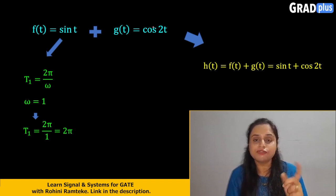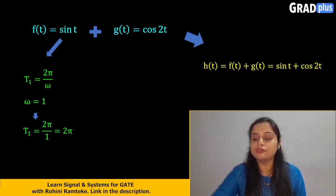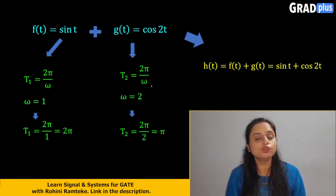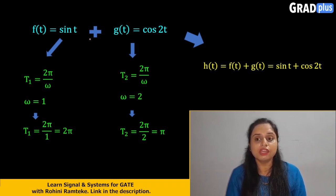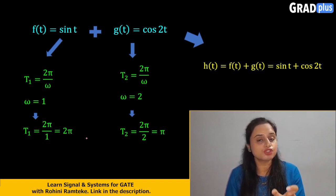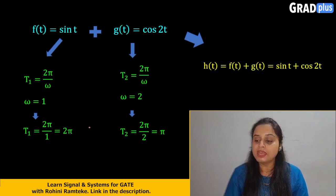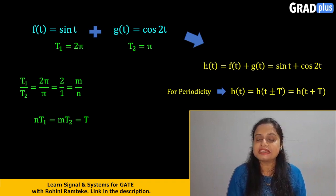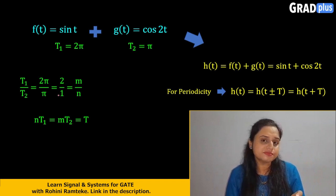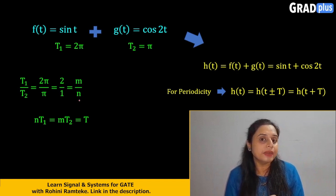Similarly, for the second signal, find out the time period. T2 equals 2π divided by ω. In this case, the value of ω is 2. After substituting the value, we get T2 = π. Now individually we have T1 = 2π and T2 = π. For finding the value of T, we take the ratio of these two time periods: T1/T2 = 2π/π = 2/1, which is denoted by m/n.